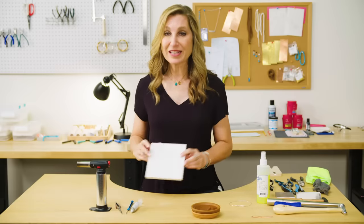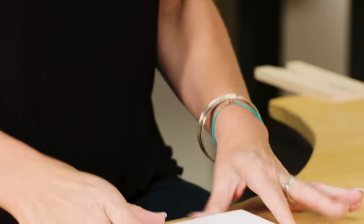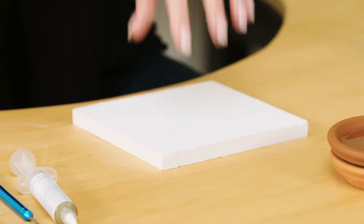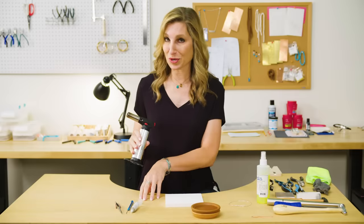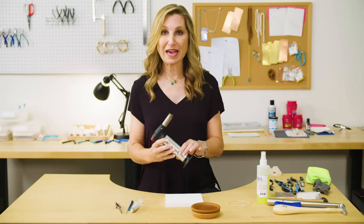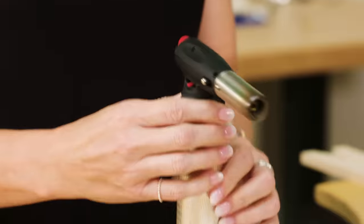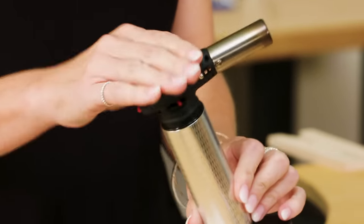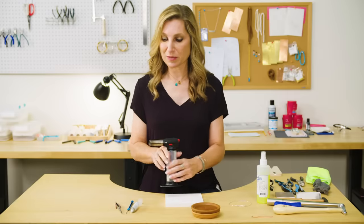First of all, you're going to need a fireproof surface, and this is just a soldering board. You'll have that right here in front of you so that when you have your flame, you can direct the flame right at that and not at your workbench. Speaking of your flame, you're also going to need a torch of some sort. This is a great small torch, and I'm going to show you how to use that in just a minute.